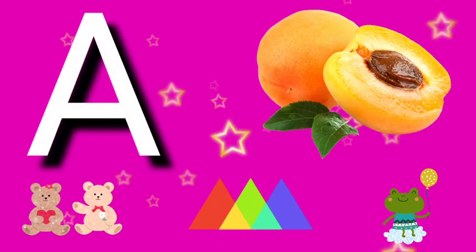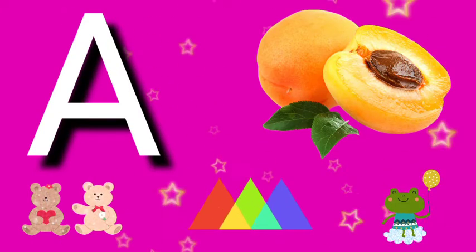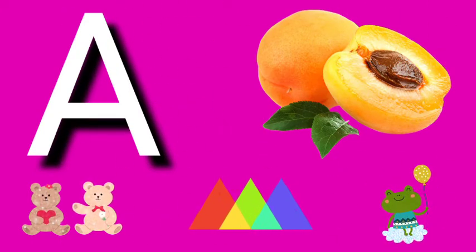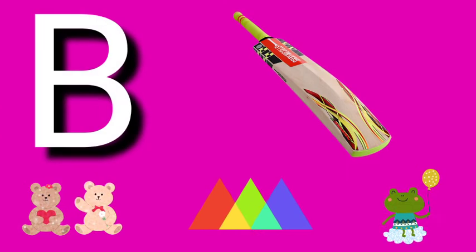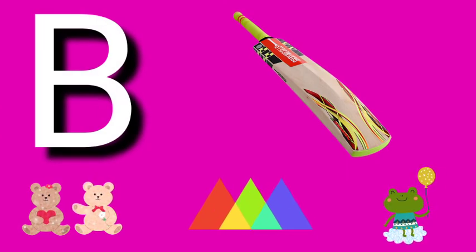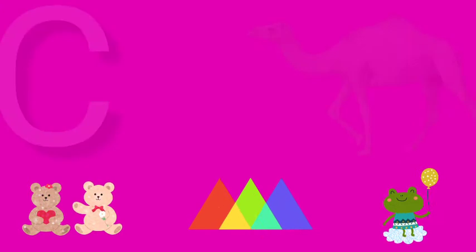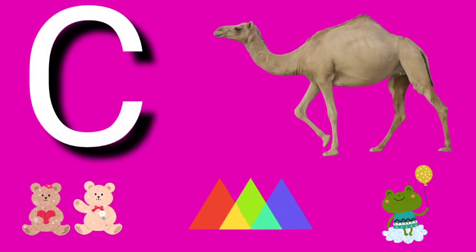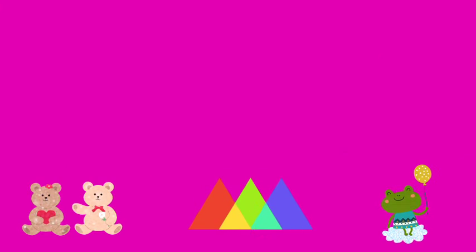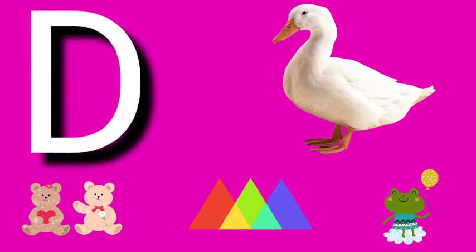A for apricot, apricot means kubani. B for bat, bat means balla. C for camel, camel means unt. D for duck, duck means batak.